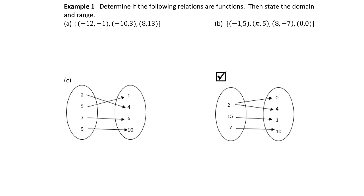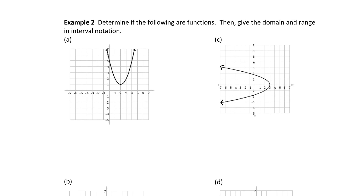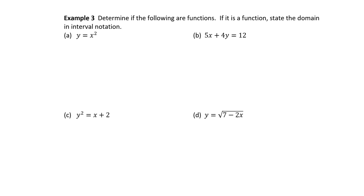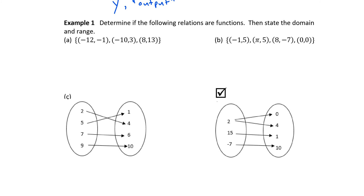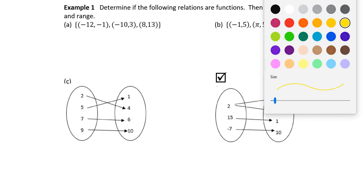In this section, we're going to look at several different presentations of functions. Functions can be written as a set of ordered pairs, as you see in examples A and B. They can be expressed as a mapping, as you see in example C, but they can also be presented as a graph, and finally as equations. In example 1, our problem is to determine if the following relations are functions, and then state the domain and range.